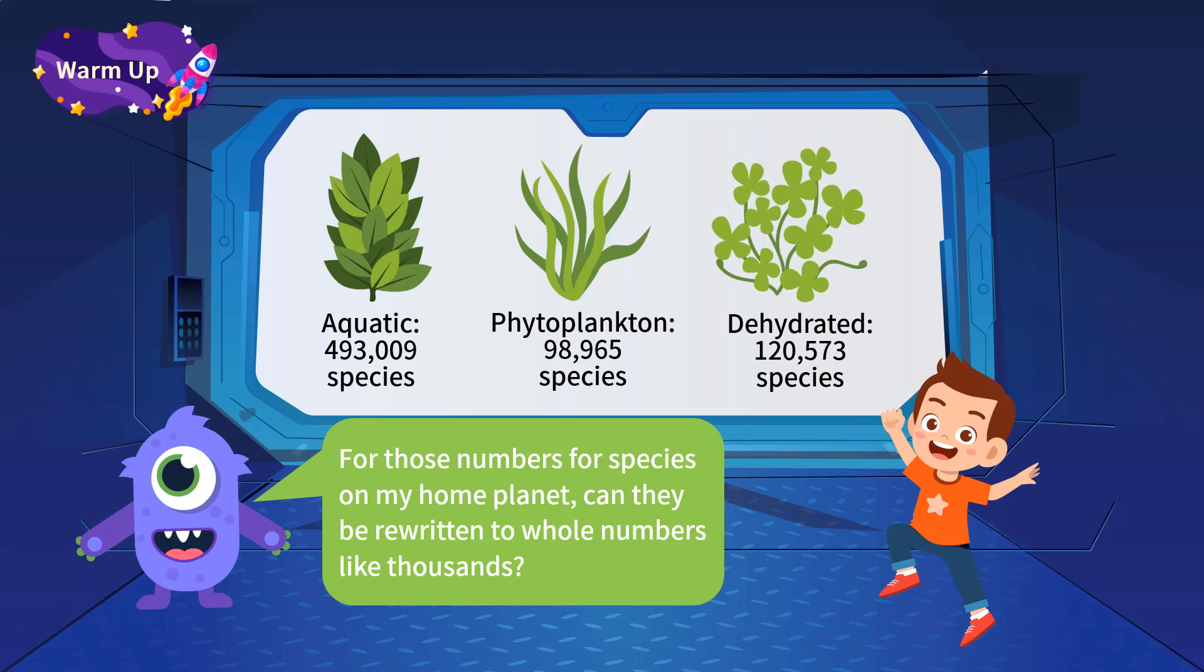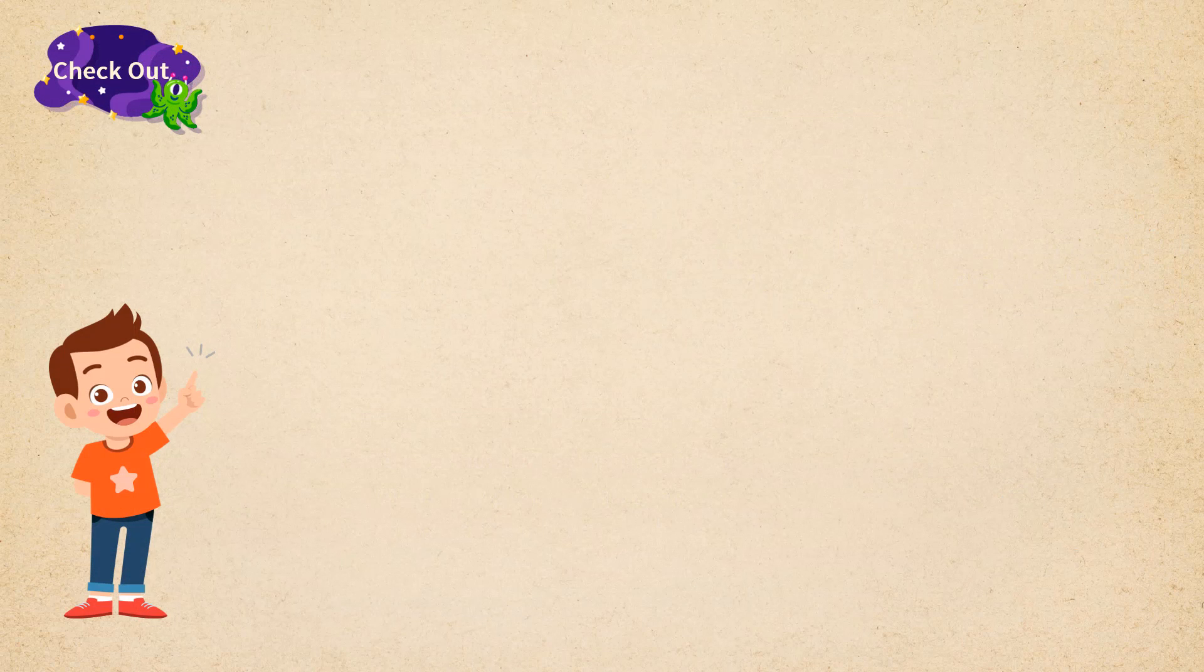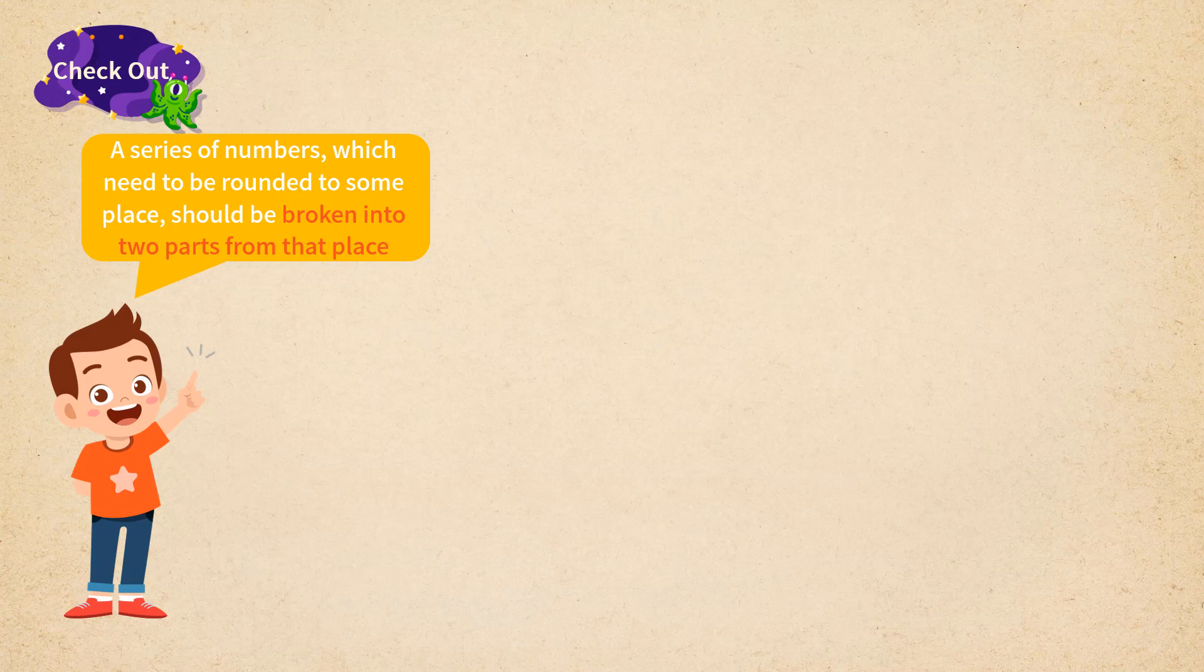Timmy answered proudly, absolutely! That's why we need the round to the nearest method. A series of numbers which need to be rounded to some place should be broken into two parts from that place.